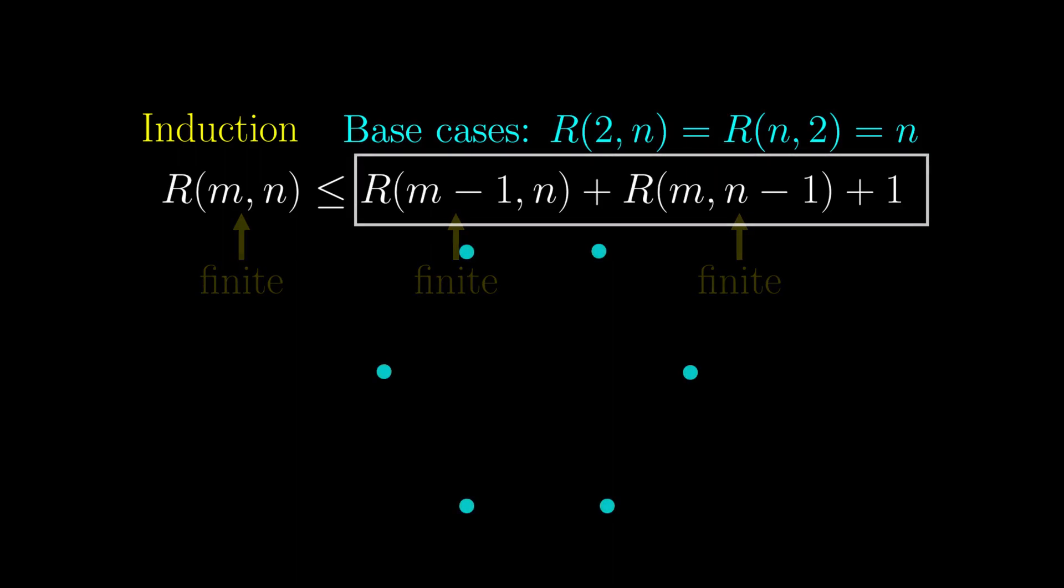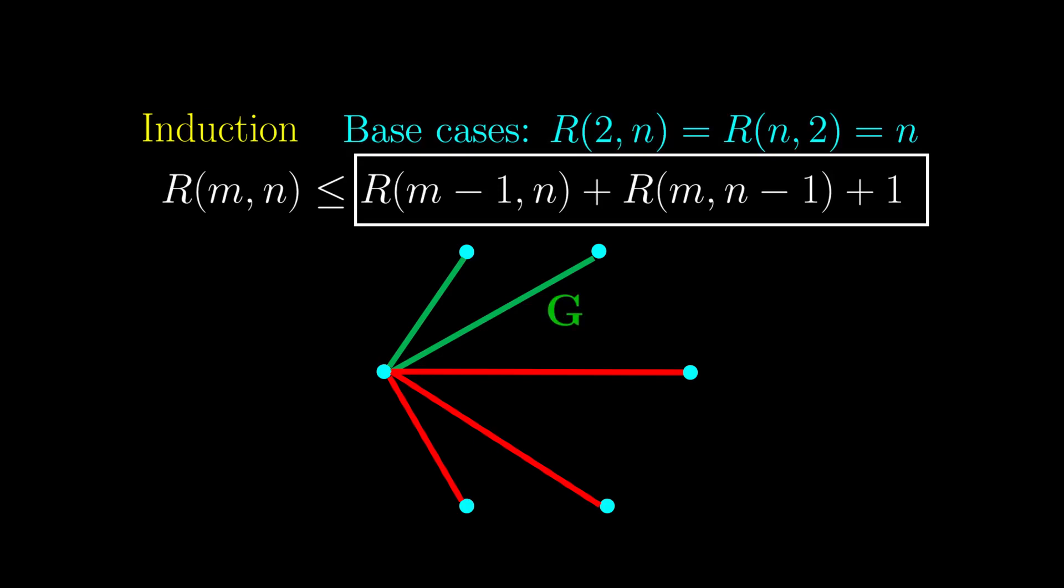So now, consider a graph with exactly this number of vertices. Then we consider one particular vertex, and all the connected edges. We call the number of vertices that links to the initial vertex with green edge g, and similarly, the number of those that connect to the initial vertex using a red edge would be called r.